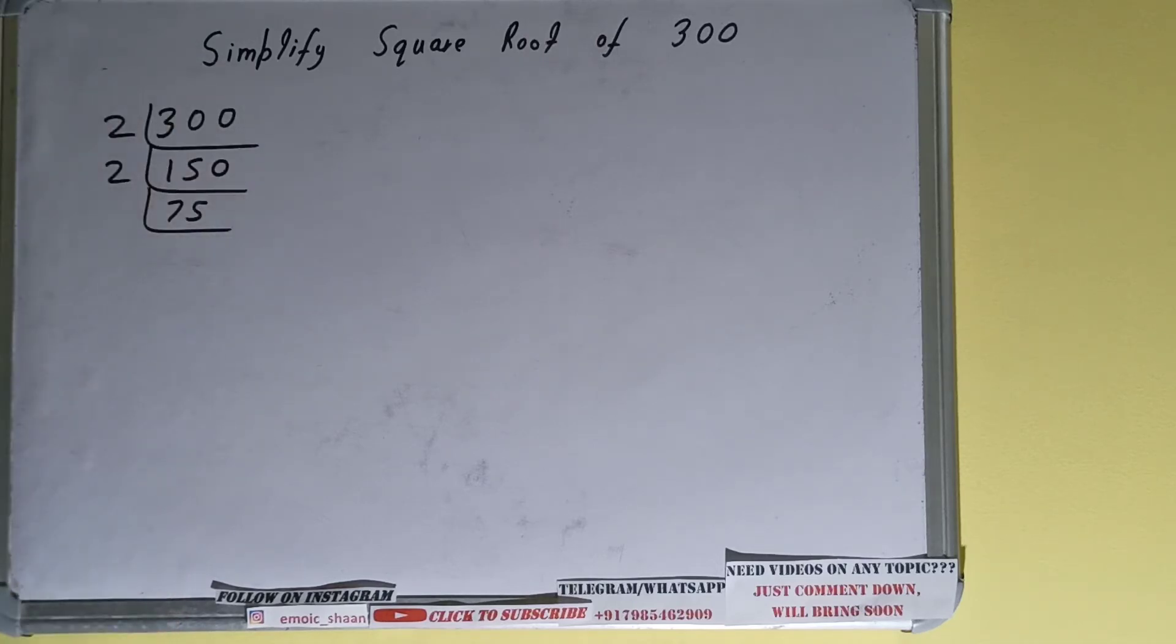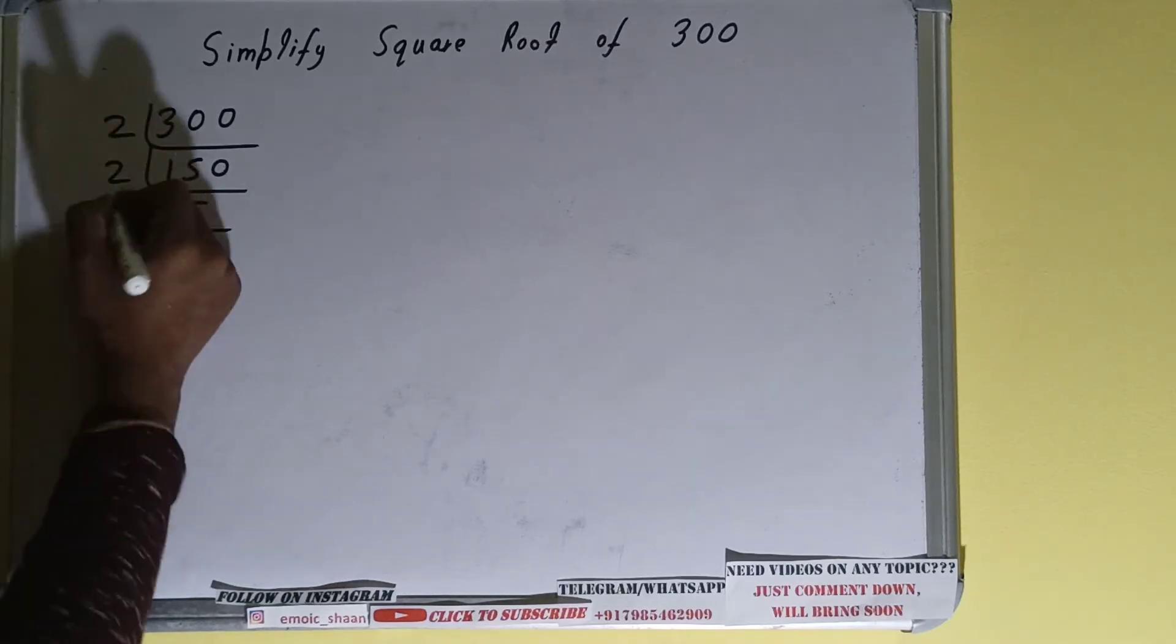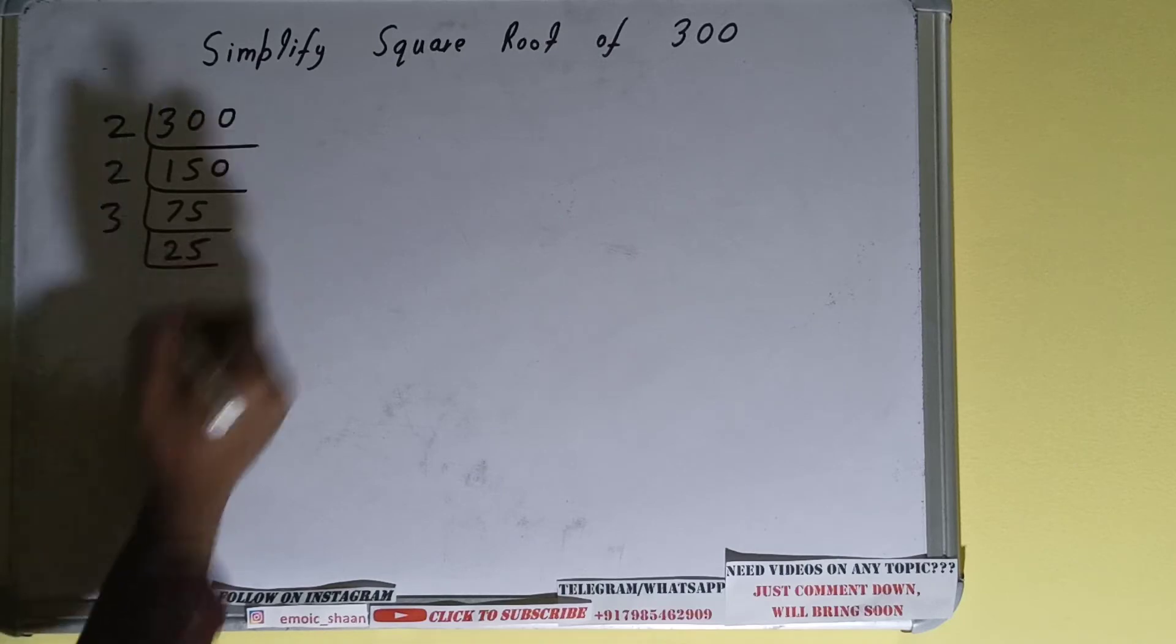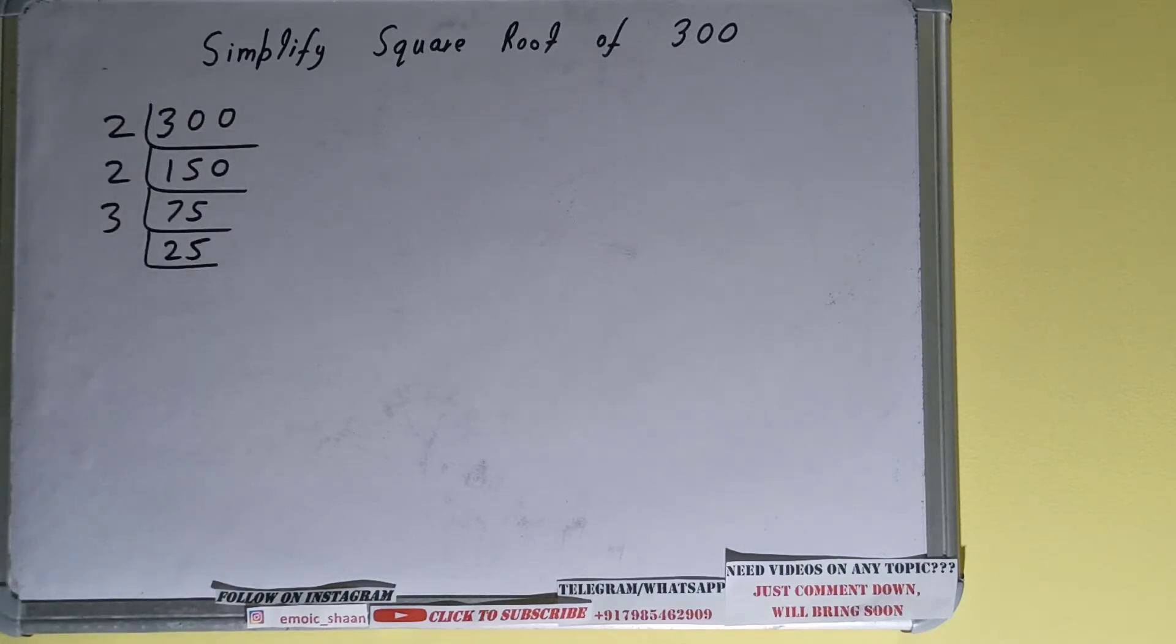Is 75 divisible by 2? The answer is no, so we'll check with the next lowest prime number that is 3. Is 75 divisible by 3? Yes it is, and we'll be having 25. Is 25 divisible by 3? The answer is no.